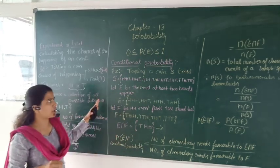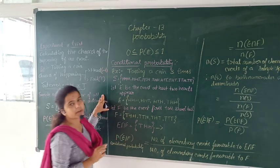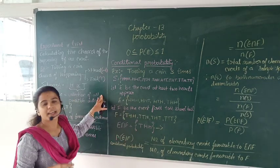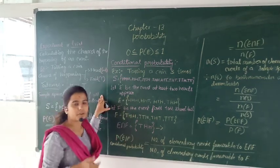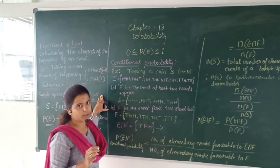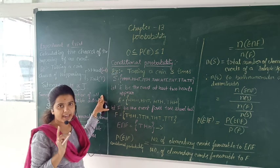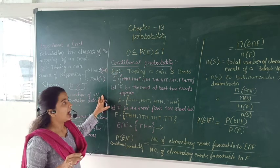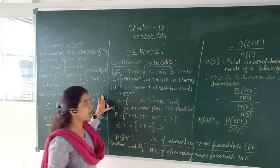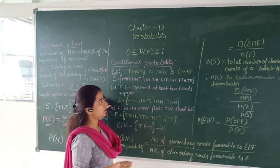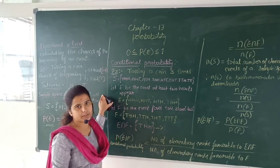Let's come to the topic of conditional probability. Before, I tossed a coin once only. Now in this experiment, I have taken a single coin and I am repeatedly tossing the same coin three times.